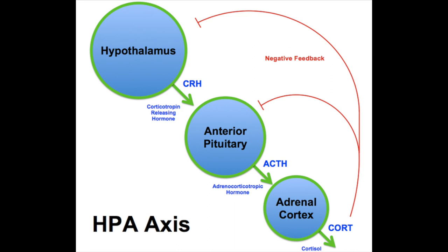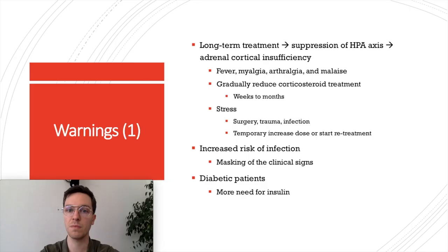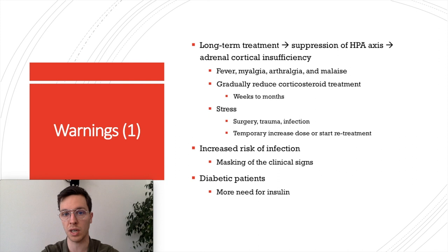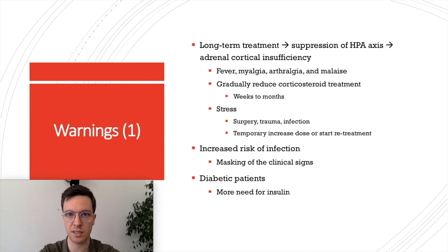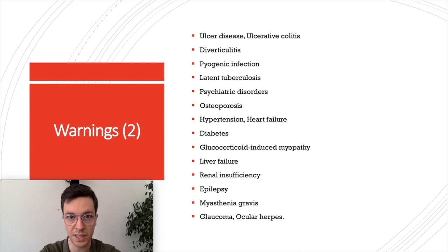Regarding warnings: long-term treatment with prednisolone may lead to suppression of your own HPA axis, potentially causing adrenal cortical insufficiency with symptoms of fever, myalgia, arthralgia, and malaise. Always gradually reduce corticosteroid treatment over weeks to months so the HPA axis can recover. If high stress — such as surgery, trauma, or infection — occurs during this period, it may be wise to increase the dose temporarily or restart it if recently stopped. Because prednisolone suppresses your immune system, it can mask clinical symptoms of infections, and diabetic patients may need more insulin.